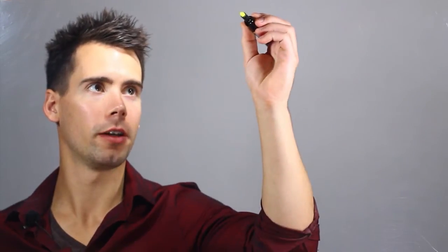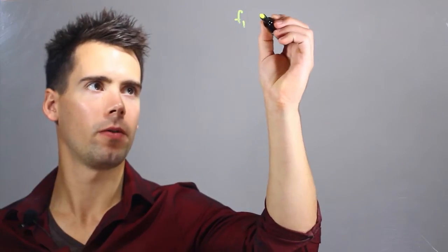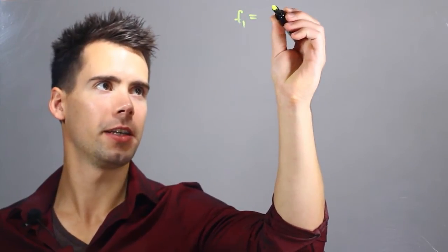You can start this problem by looking at one fraction. You can call it F1 for fraction 1 and you can say it's equal to 3 quarters.